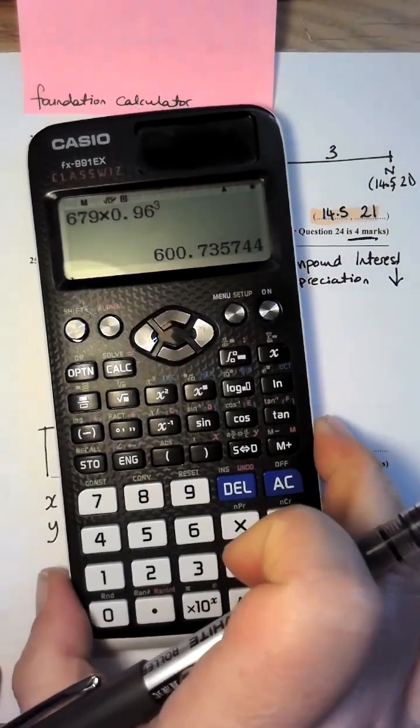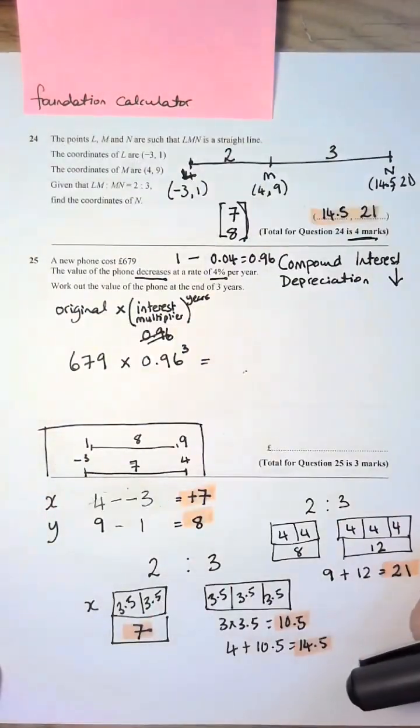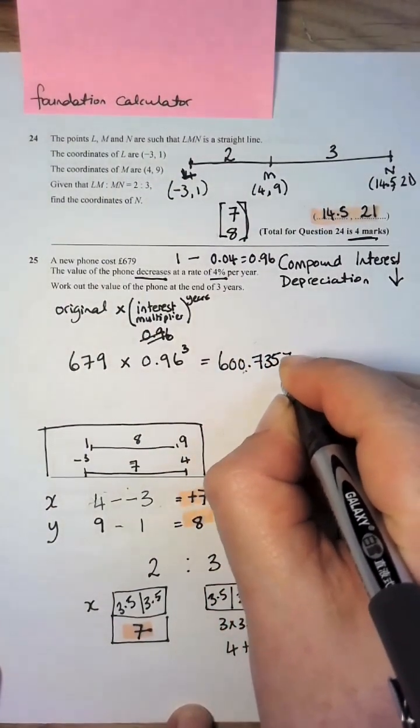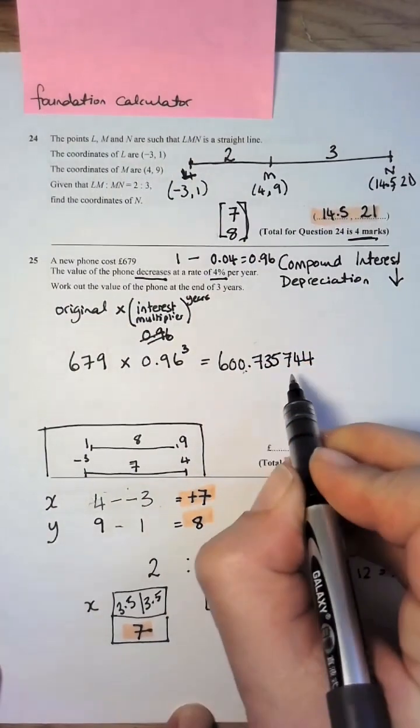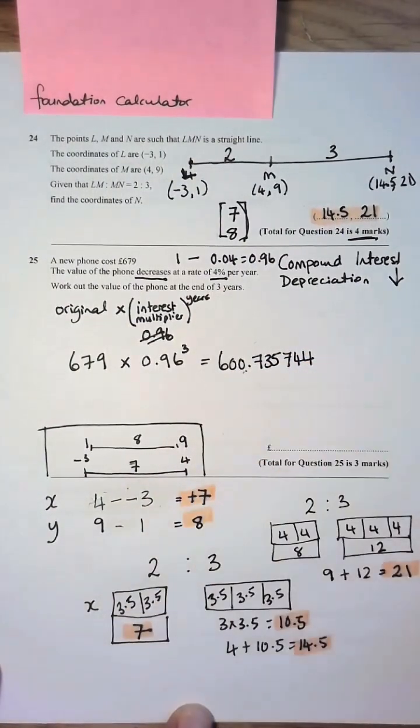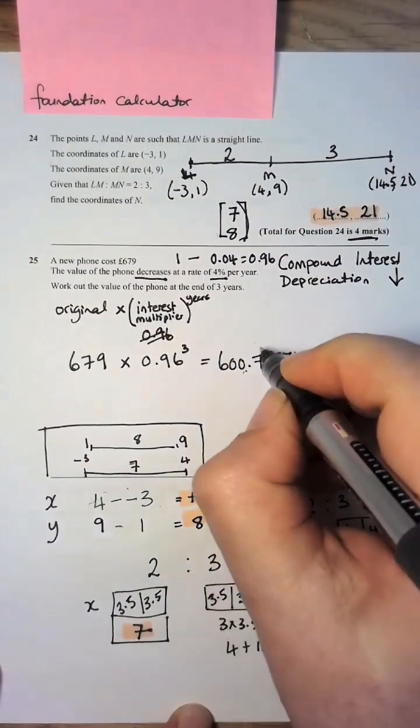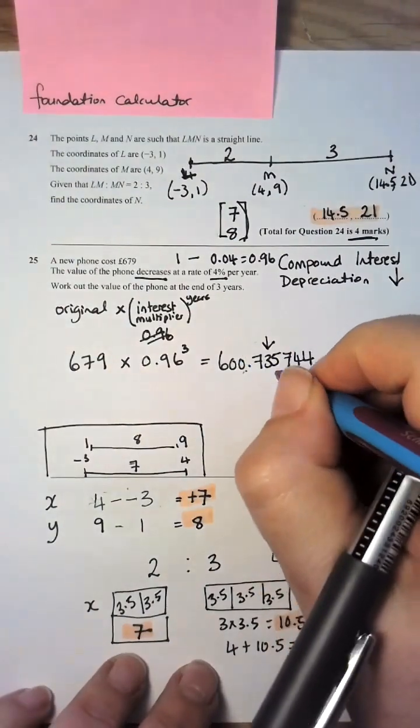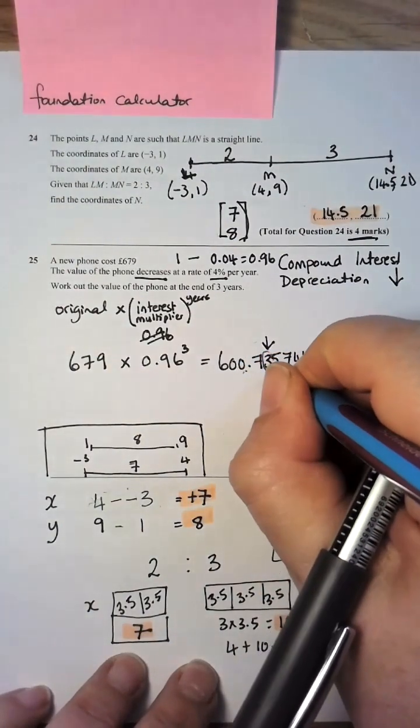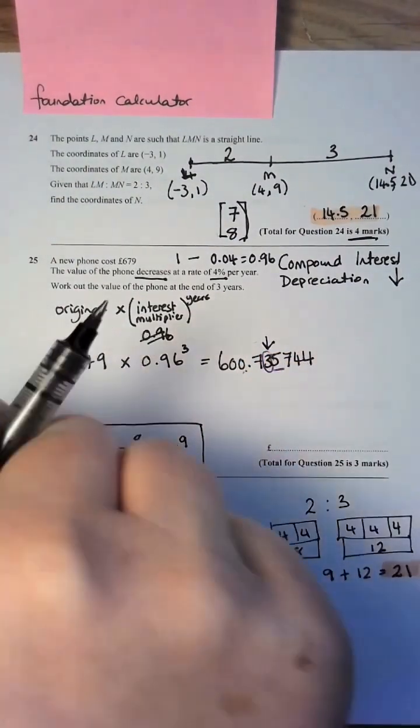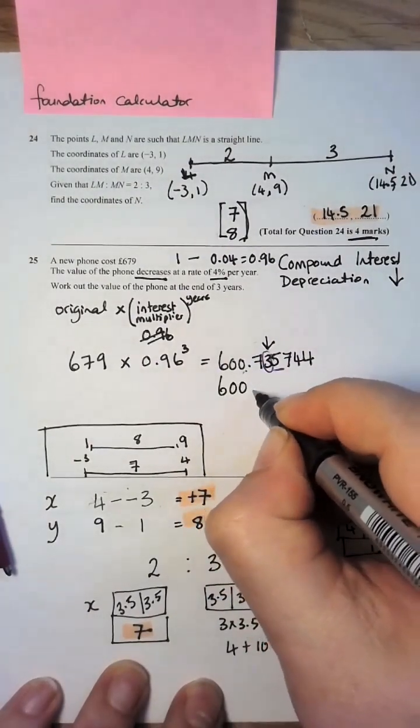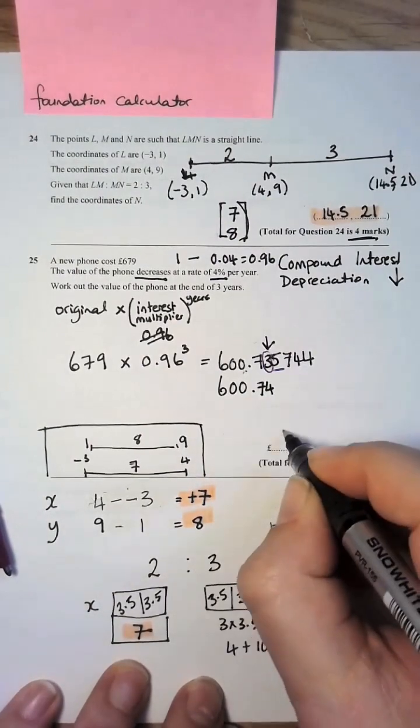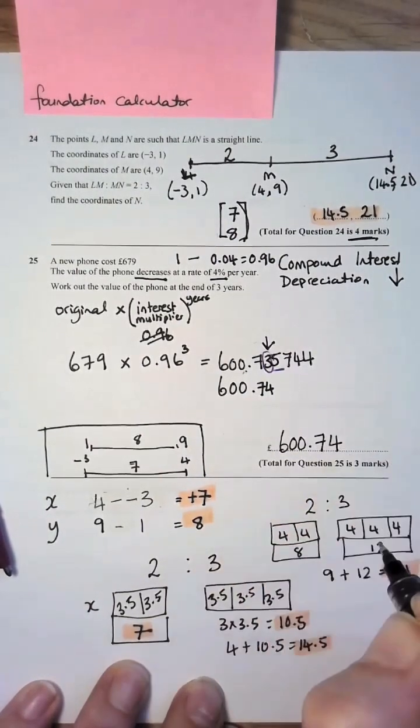This is the answer here, so I'm going to write all of that down on my page. Now it is money, I cannot put all of these here, but I do round it to the nearest pence. This is the number that I'm rounding to, this is the number that tells me about it, so it's 600 point, this becomes a 4, this 7 stays, so it's 674 pence.